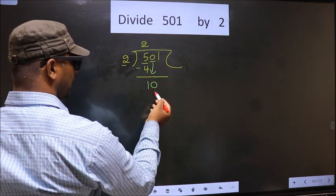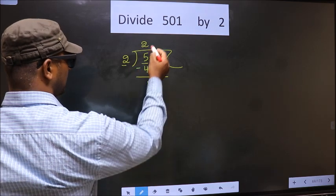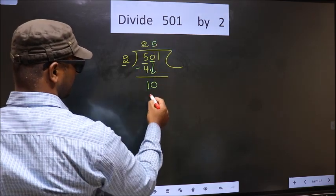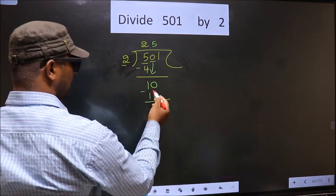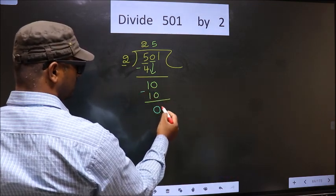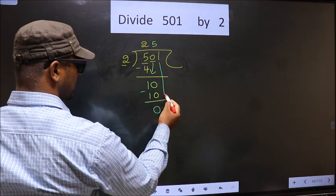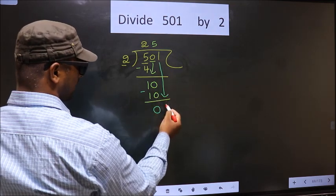Now here we have 10. When do we get 10 in 2 table? 2 5s, 10. Now you subtract 10 minus 10, 0. Now you bring down the beside number. That is 1 down.